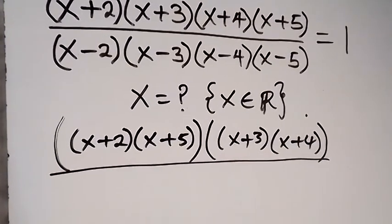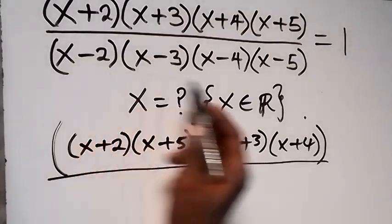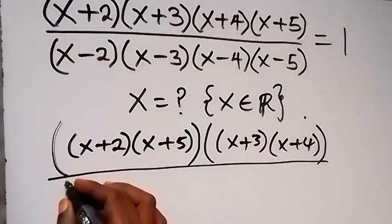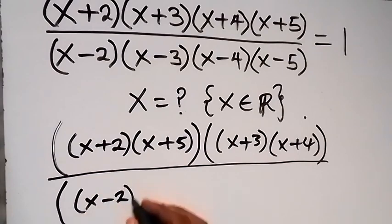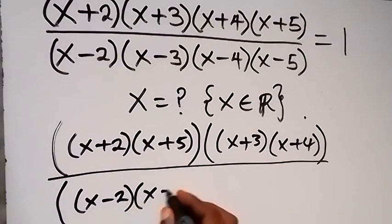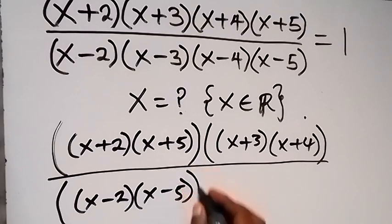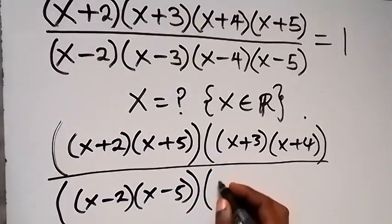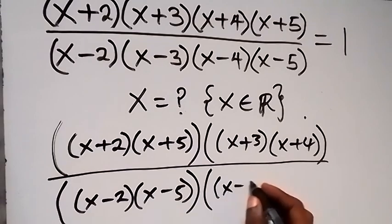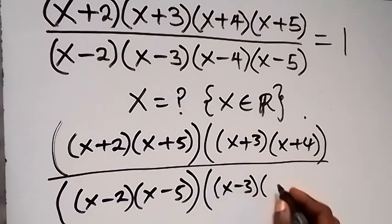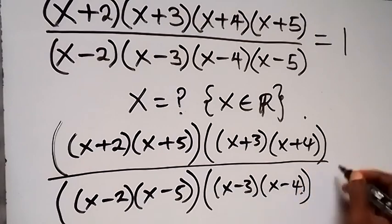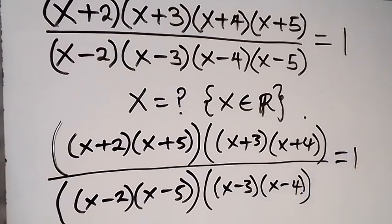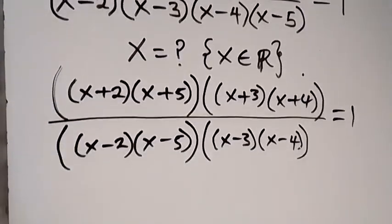We apply the same thing in the denominator: we group (x−2)(x−5) together, and also we group (x−3)(x−4) together. Then we equate it to 1.